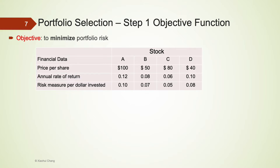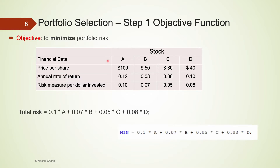Moving on to the objective function. We try to minimize the portfolio risk. For stock A, the risk per dollar is 10 cents, so if we invest A dollars in stock A, the risk from investing in A should be A multiplied by 0.1. Similarly, we can calculate the risk for other stocks: B multiplied by 0.07, C multiplied by 0.05, and D multiplied by 0.08. We sum up all of them to obtain our total portfolio risk. The objective is to minimize the total risk, so we use the min function in LINGO. Be sure to end your line with a semicolon.